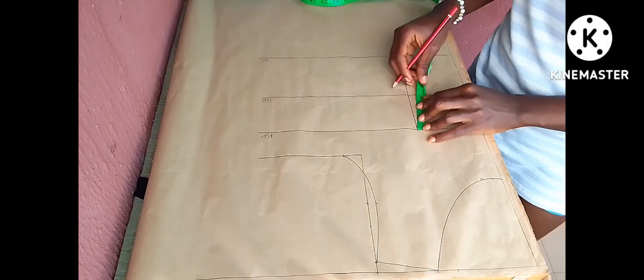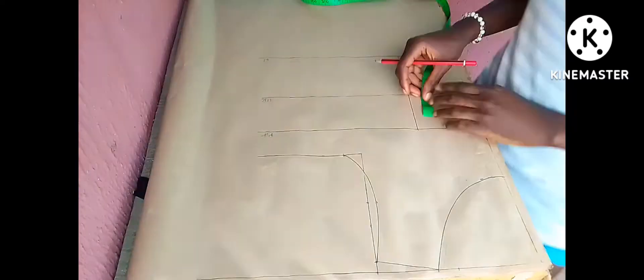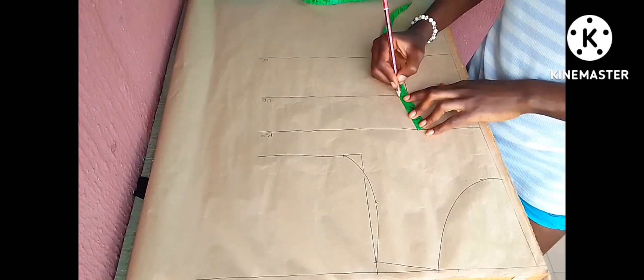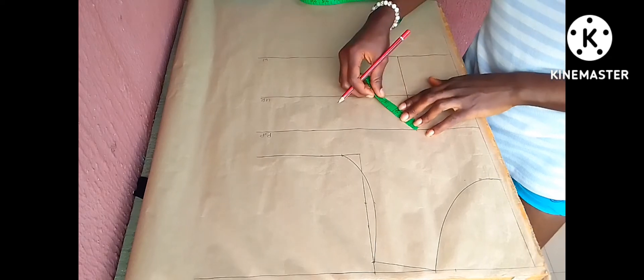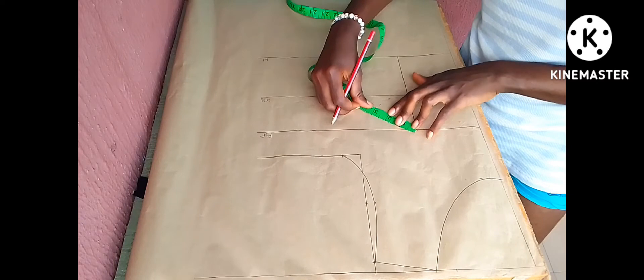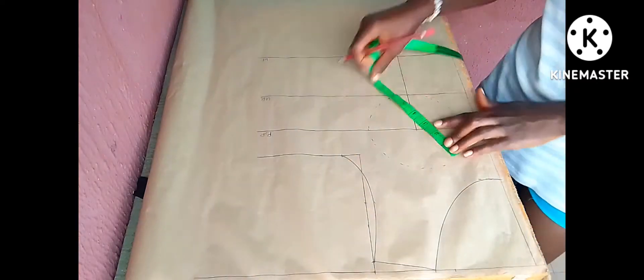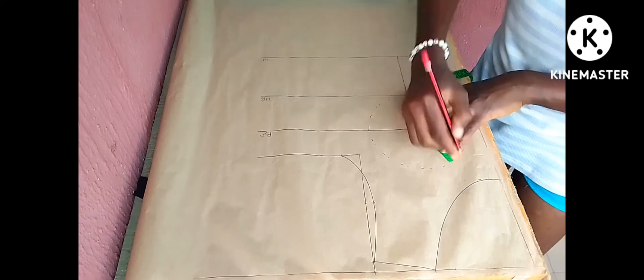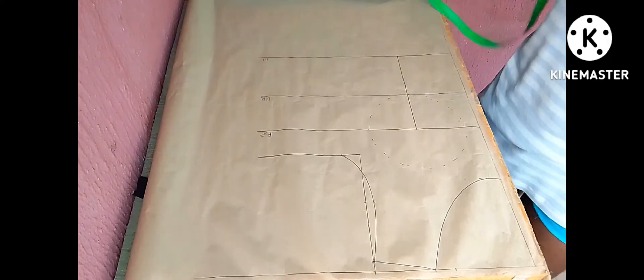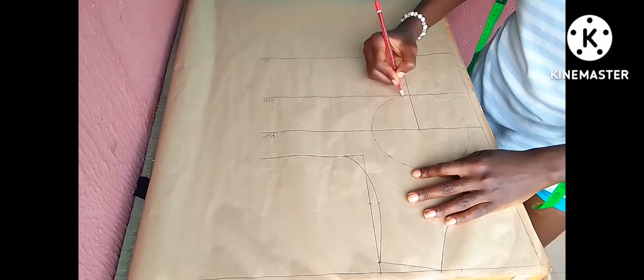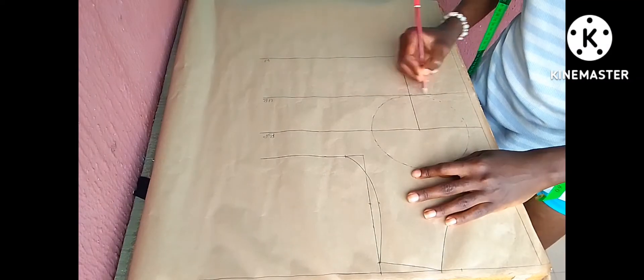Now I'm going to measure the distance from my underburst to my bust point. Whatever it gives me, I'm going to make a circle around there using that measurement as a radius and also I'm using that my bust point as the center of that circle. So the circle is not really necessary but it is just there for a guide.